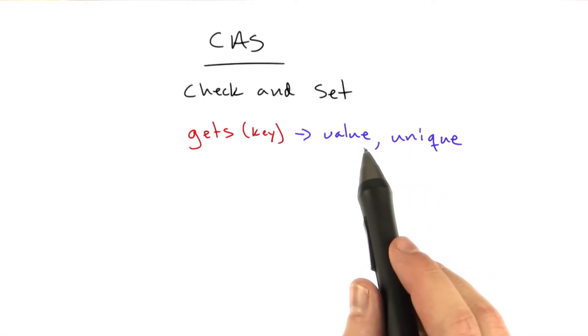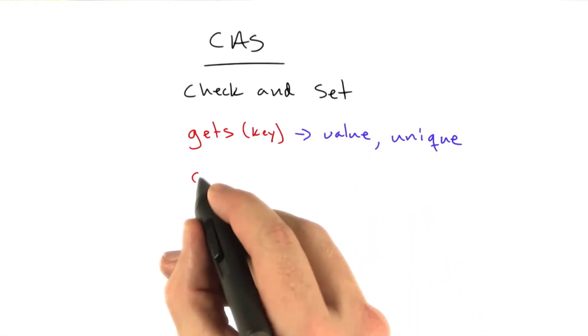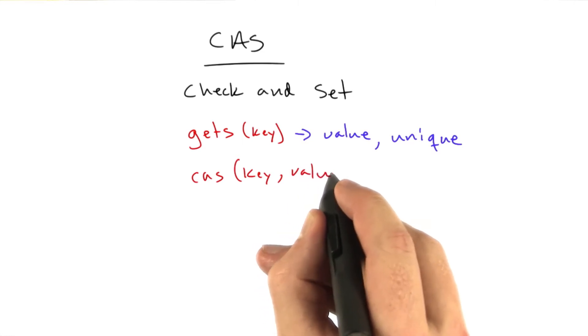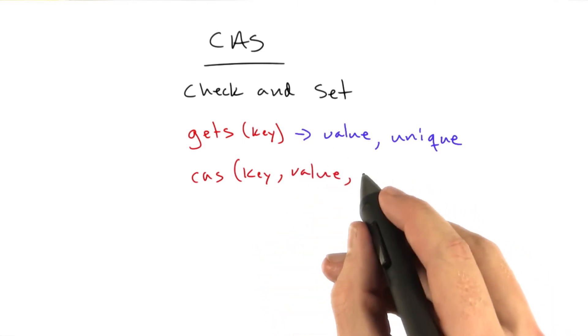specific to this value in Memcached. And there's another command called CAS, which takes a key, a value, just like set would, and also a unique.